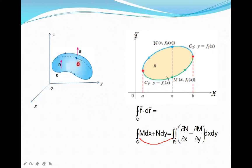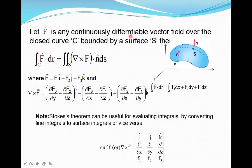Now, what is the statement of Stokes theorem? If f bar is any continuous differentiable vector field over the closed curve C bounded by a surface S, then the integral of f bar dot dr over the curve C equals the double integral of del cross f dot N dS over the surface S, where N is a unit normal vector.